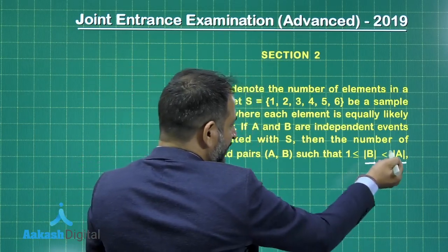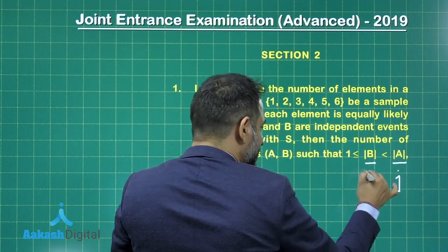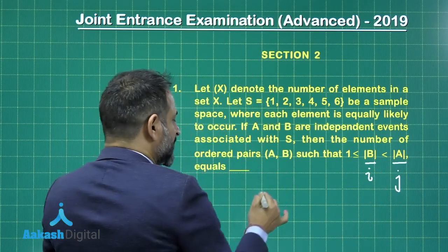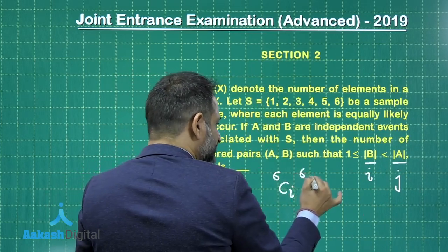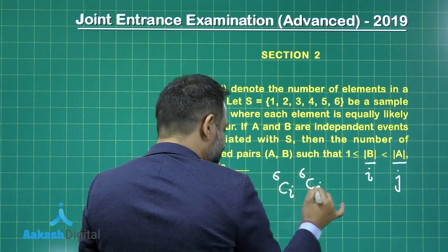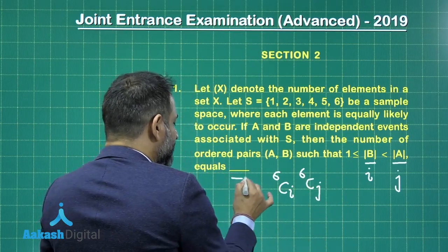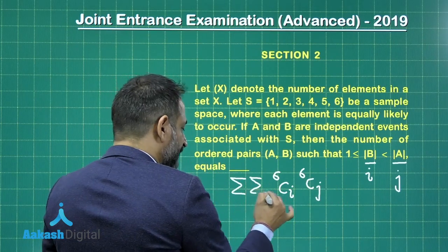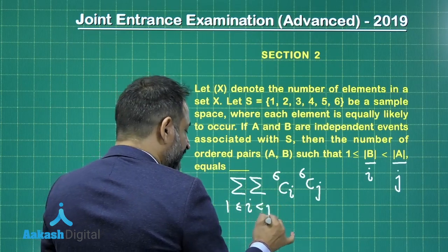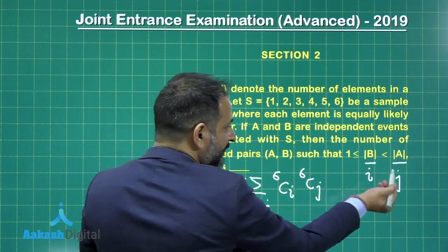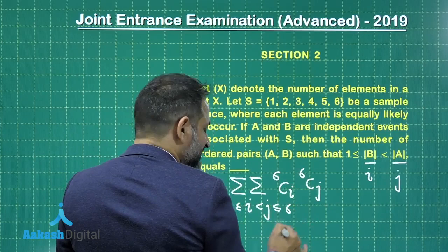Let us say for A we are going to select j elements, and for B we are going to select i elements. For selecting B it is 6Ci at any time, and for selecting A it is 6Cj. Both are independent so we multiply the selections. It is also given that i is greater than 1, j is greater than i because the number of elements in A is greater than the number of elements in B, and both have to be less than 6.